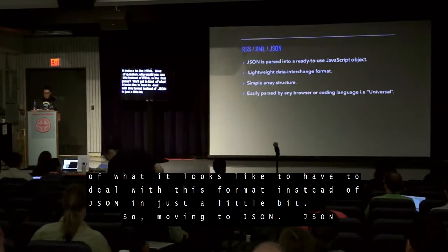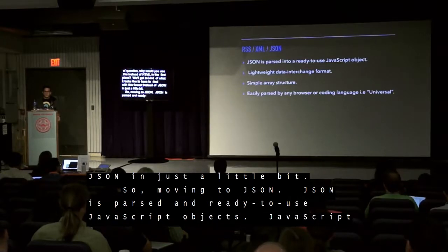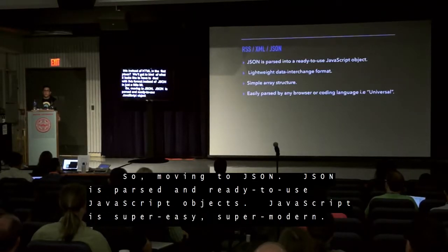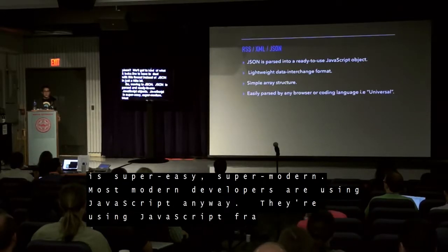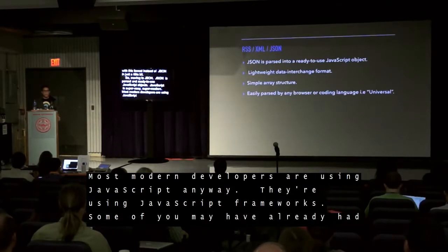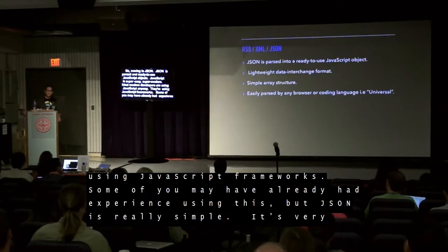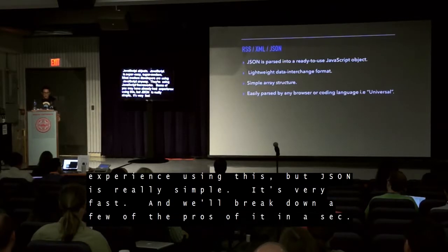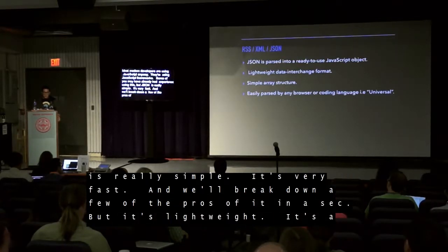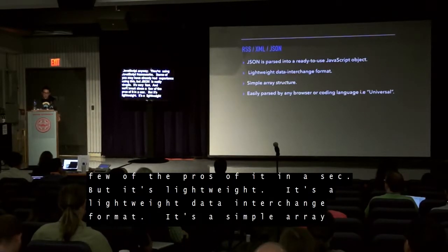So we're going into JSON. JSON is parsed and ready-to-use JavaScript objects. JavaScript is super easy, super modern. Most modern developers are using JavaScript anyway — JavaScript frameworks. JSON is really simple, very fast, and lightweight. It's a lightweight data interchange format.